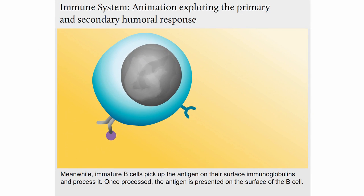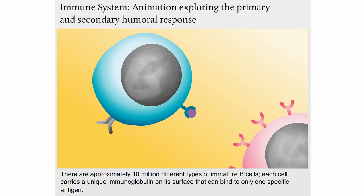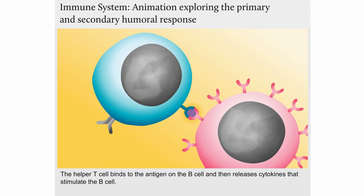Meanwhile, immature B-cells pick up the antigen on their surface immunoglobulins and process it. Once processed, the antigen is presented on the surface of the B-cell. There are approximately 10 million different types of immature B-cells, each carrying a unique immunoglobulin on its surface that can bind to only one specific antigen. The helper T-cell binds to the antigen on the B-cell and then releases cytokines that stimulate the B-cell.